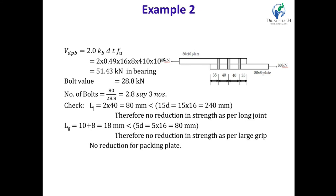From the data, the tension load is given, so we find the number of bolts: number of bolts = total load / bolt value = 80 kN / 28.8 kN. We require 3 bolts to connect the two plates under tension load. In this example, just three steps are needed: shear capacity of bolt, bearing capacity of bolt, and number of bolts. These are the example calculations for a tension member.